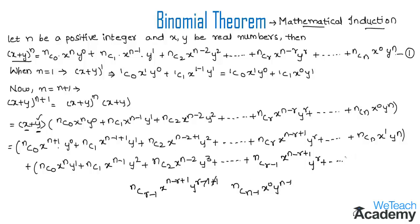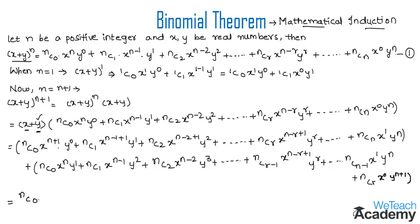Multiplying y with nC(n-1) · x^0 · y^(n-1) gives nC(n-1) · x^1 · y^n. The nth term becomes nCn · x^0 · y^(n+1). And the first term from the x-multiplication gives nC0 · x^(n+1) · y^0. We observe that x^n · y is a common factor in certain terms, so we begin grouping.